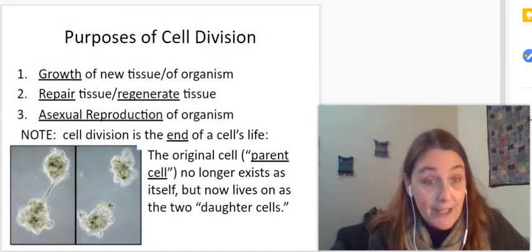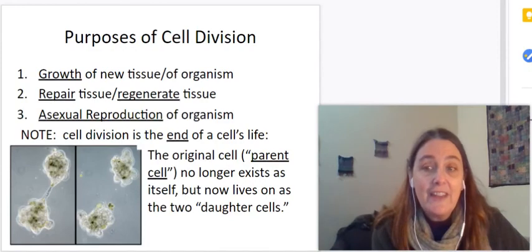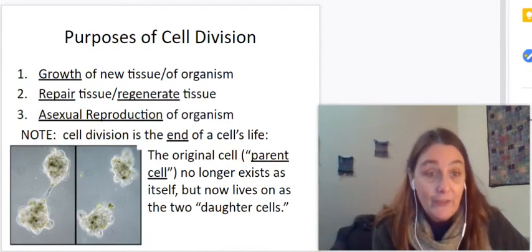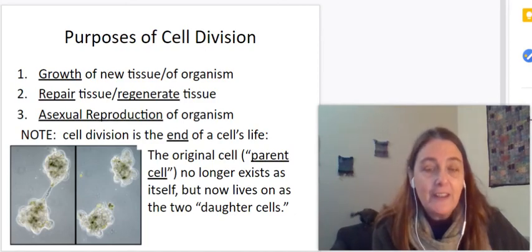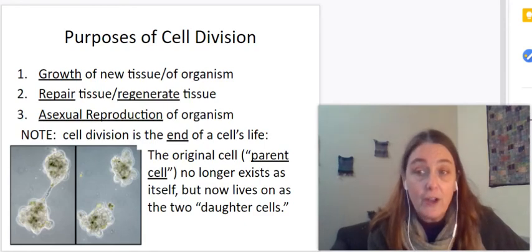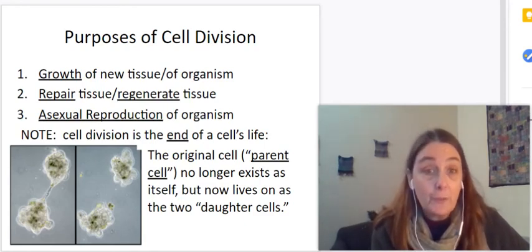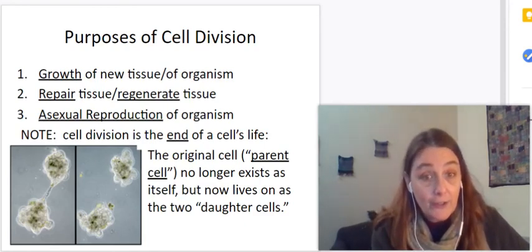One of the things to keep clear here is that when the cell divides, the parent cell is no longer. The single cell is now living on as two daughter cells. Okay. The original cell is called the parent and the two offspring cells are called daughter cells.